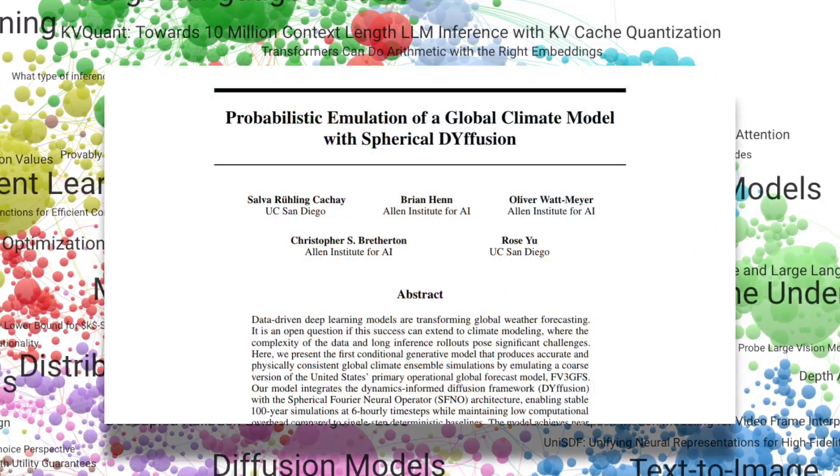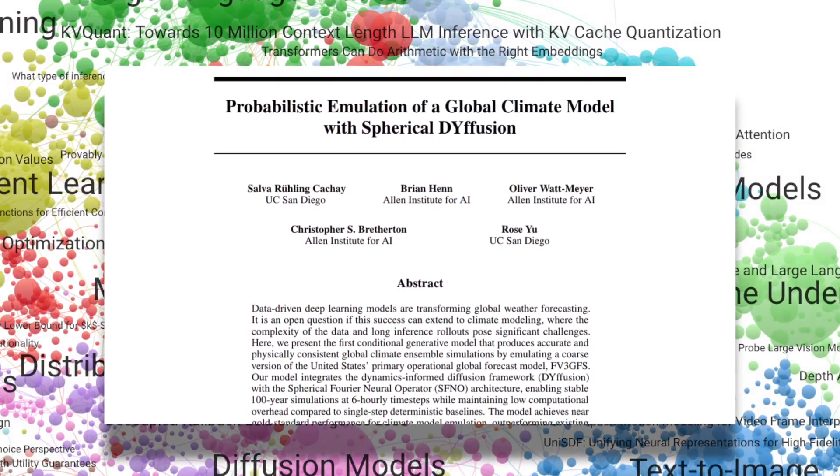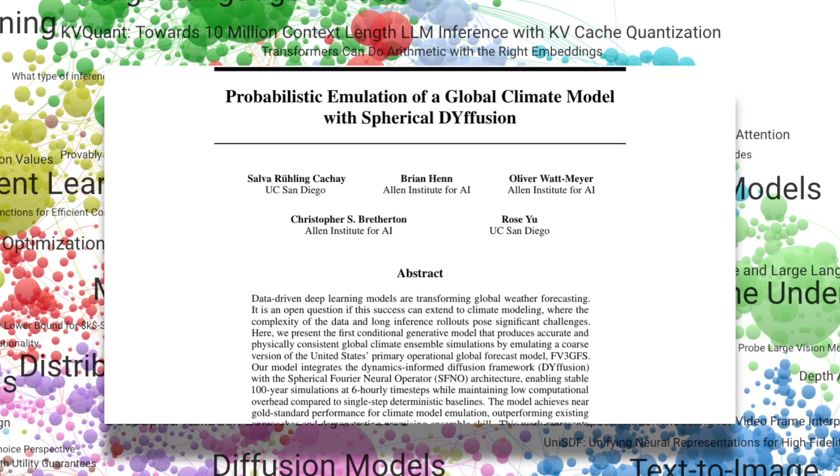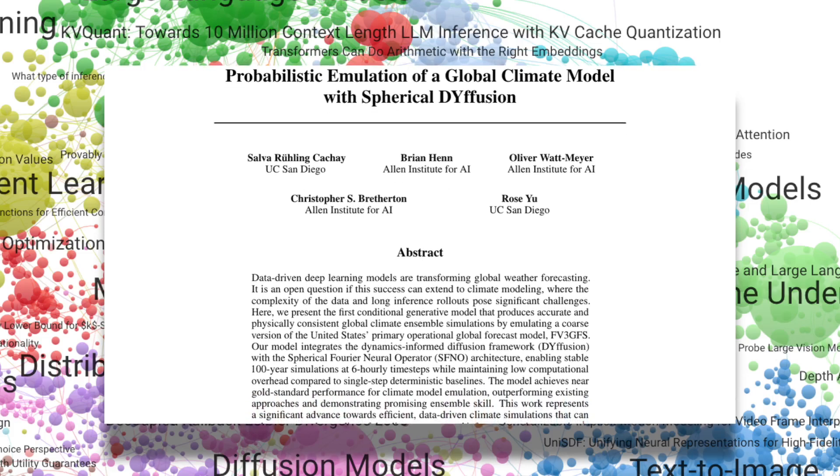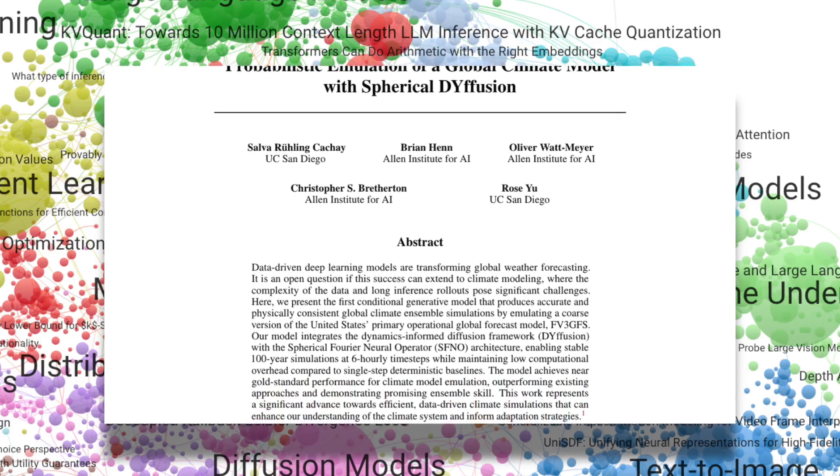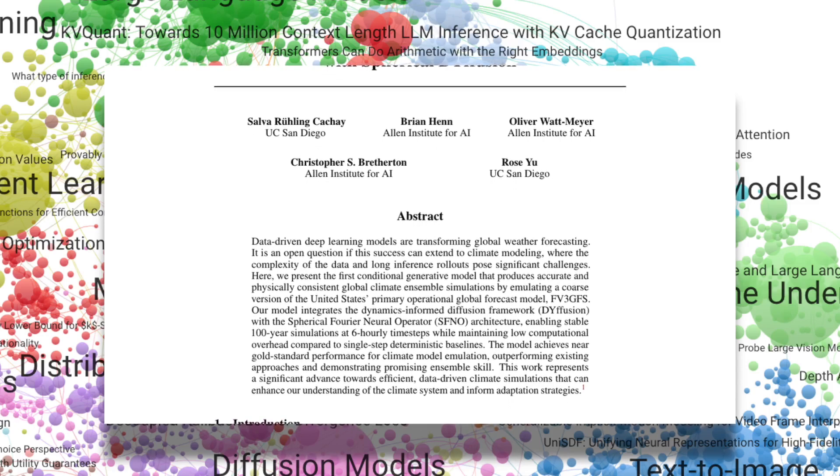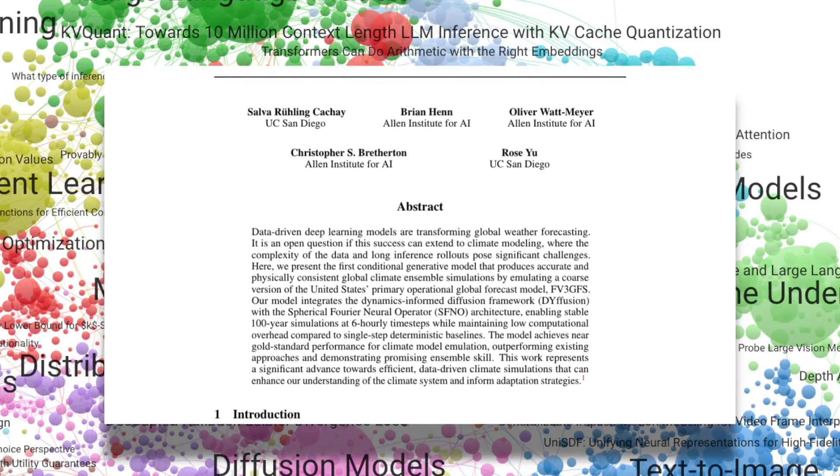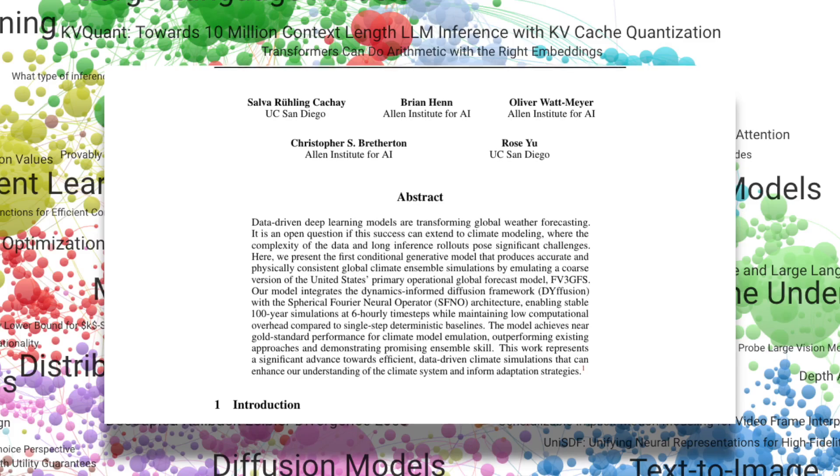Spherical Diffusion combines a dynamics-informed diffusion framework with the Spherical Fourier Neural Operator to create highly accurate, physically consistent climate simulations. This model can emulate 100-year climate trajectories at six hourly intervals with minimal computational overhead, which marks a major breakthrough in climate modeling, offering stable, high-resolution simulations at a low cost.